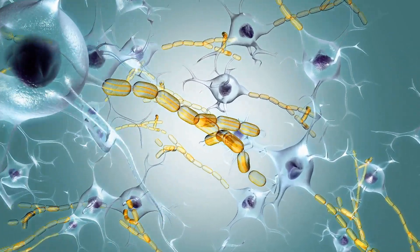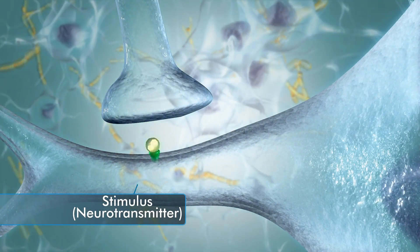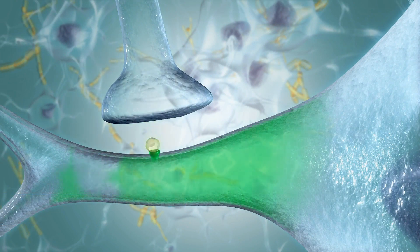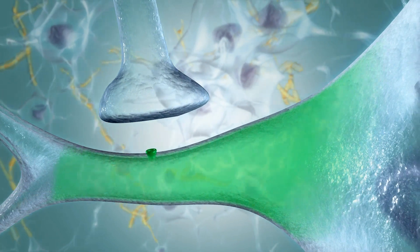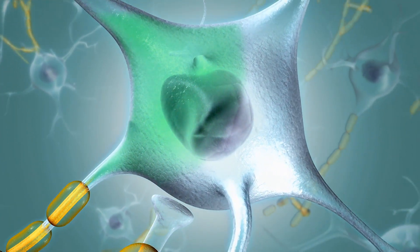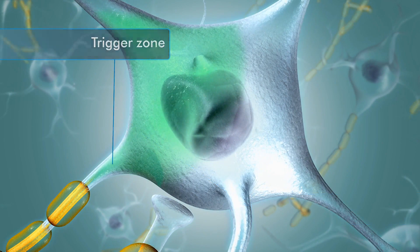In the input zone, graded potentials are generated when stimuli such as neurotransmitters attach to receptors of chemically gated ion channels, causing them to open briefly. This shift in the distribution of ions on either side of the membrane results in a slight change in electrical potential. Graded potentials travel a short distance through the input zone toward the trigger zone before fading away.